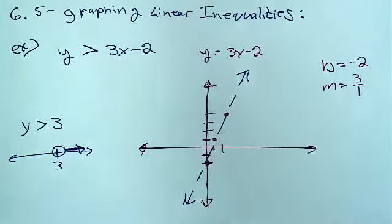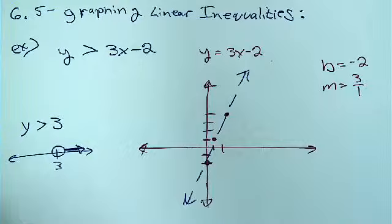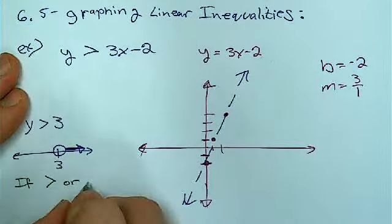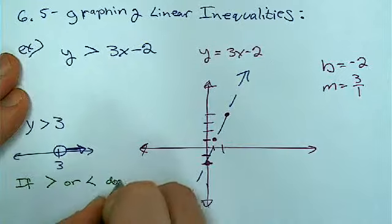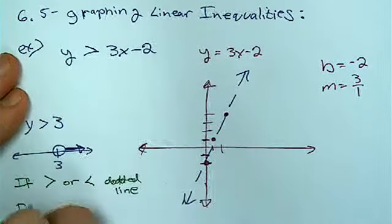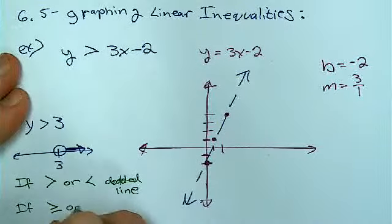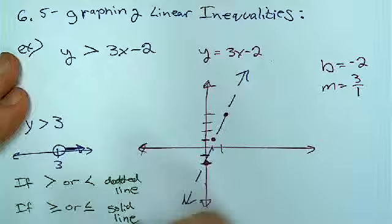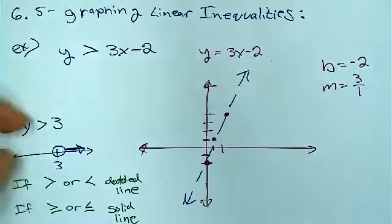Let me write down what I did there so we remember it. If we're talking about greater than or less than, draw a dotted line. If it's greater than equal to or less than equal to, it's a solid line. Just like what we were doing when we did this stuff.